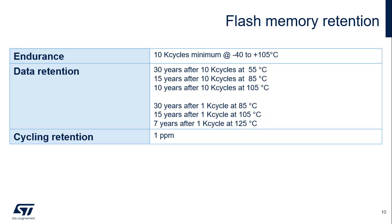The flash memory is guaranteed for a minimum of 10,000 cycles up to 105 degrees Celsius. Data retention is 30 years after 10,000 cycles at 55 degrees Celsius, 15 years after 10,000 cycles at 85 degrees Celsius, and 10 years after 10,000 cycles at 105 degrees Celsius. It is 30 years after 1,000 cycles at 85 degrees Celsius, 15 years after 1,000 cycles at 105 degrees Celsius, and 7 years after 1,000 cycles at 125 degrees Celsius.